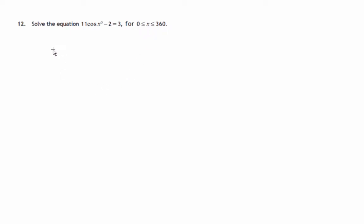So let's first of all look at rearranging this equation to try and get a value for cos x. I'm going to add 2 to both sides. I'm going to get 11 cos x equals 5, and I'm going to divide both sides by 11.